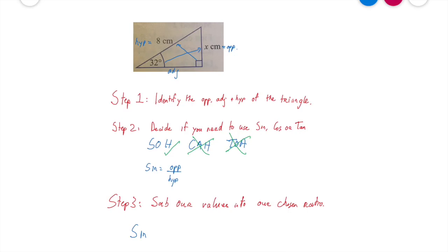Sine 32 is equal to, opposite is x over hypotenuse. So that's our x there, so we've got the opposite. And our hypotenuse we're told is eight. So it's x over eight.